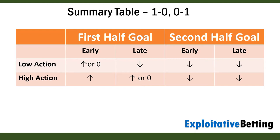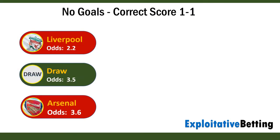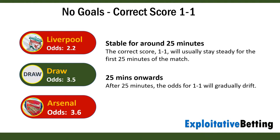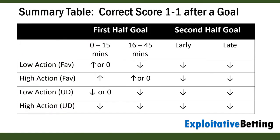A more interesting score in these kinds of matches — where you have a favourite and an underdog — is 1-all. Let's have a look at how 1-all changes when a goal is scored. If no goals are scored, the odds for the correct score 1-all will remain steady for around 25 minutes of the match. After around 25 minutes, the odds of 1-all will gradually start to drift. This is a summary table of the odds of 1-all after a goal is scored. The arrows represent whether the odds of 1-all are likely to shorten from its odds pre-match. If there's no goal, the odds for 1-all will start to drift from around the 25th minute.